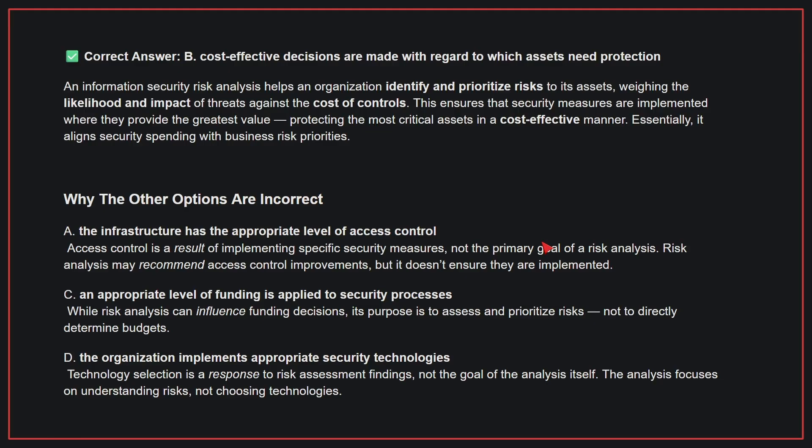C: An appropriate level of funding is applied to security processes. While risk analysis can influence funding decisions, its purpose is to assess and prioritize risks, not to directly determine budgets. D: The organization implements appropriate security technologies. Technology selection is a response to risk assessment findings, not the goal of the analysis itself. The analysis focuses on understanding risks, not choosing technologies. Therefore, the correct answer is B.